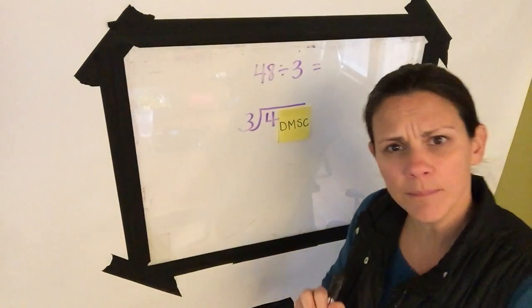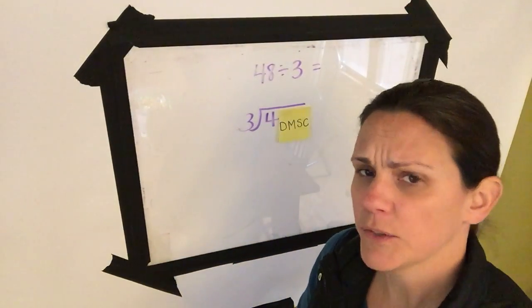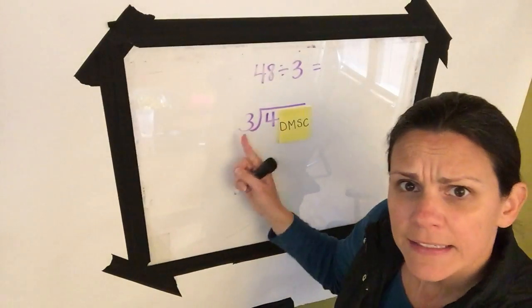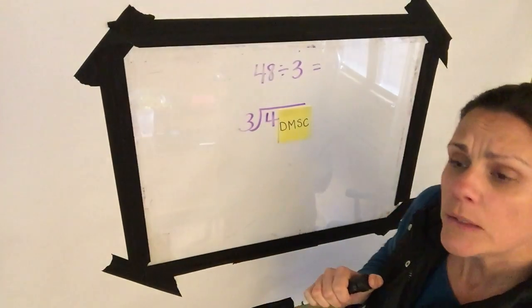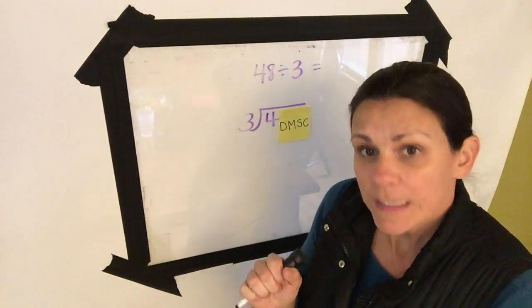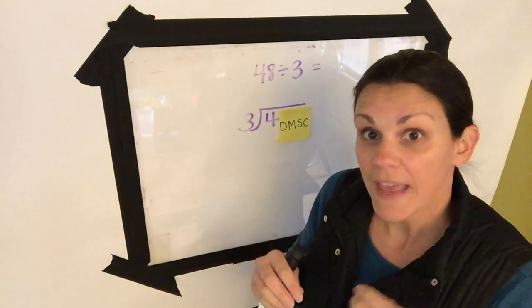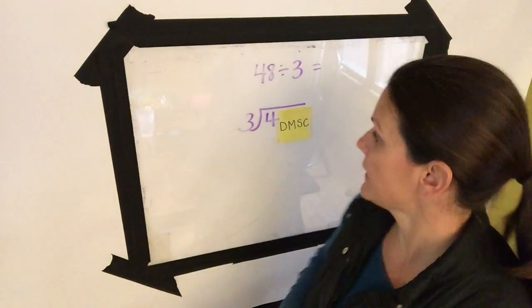4 divided by 3. Now this is a little different. We usually had the same number. Well, it won't divide equally. We will not have equal groups and that's okay. In long division, we have a solution for that.